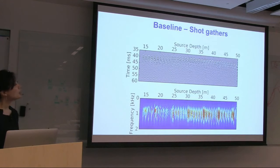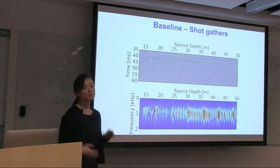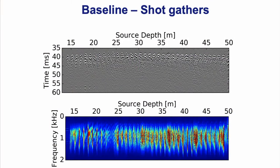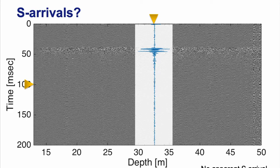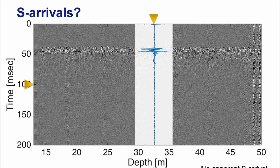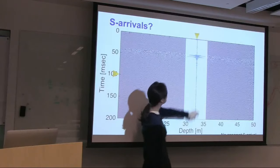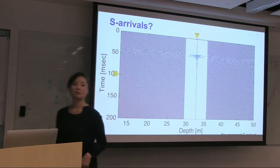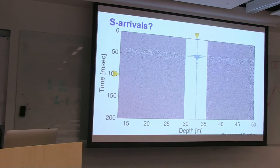We're seeing P-wave arrivals. To check for S-wave arrivals and whether we can use elastic formulation: looking at the same gather up to 60 milliseconds and then later arrivals — if the P-wave comes at around 40-50 milliseconds, we'd expect S-wave arrivals around 100 milliseconds, but we see nothing. The source is designed as a pressure source, which is P-wave type. So we focus on P-wave arrivals and acoustic implementation.